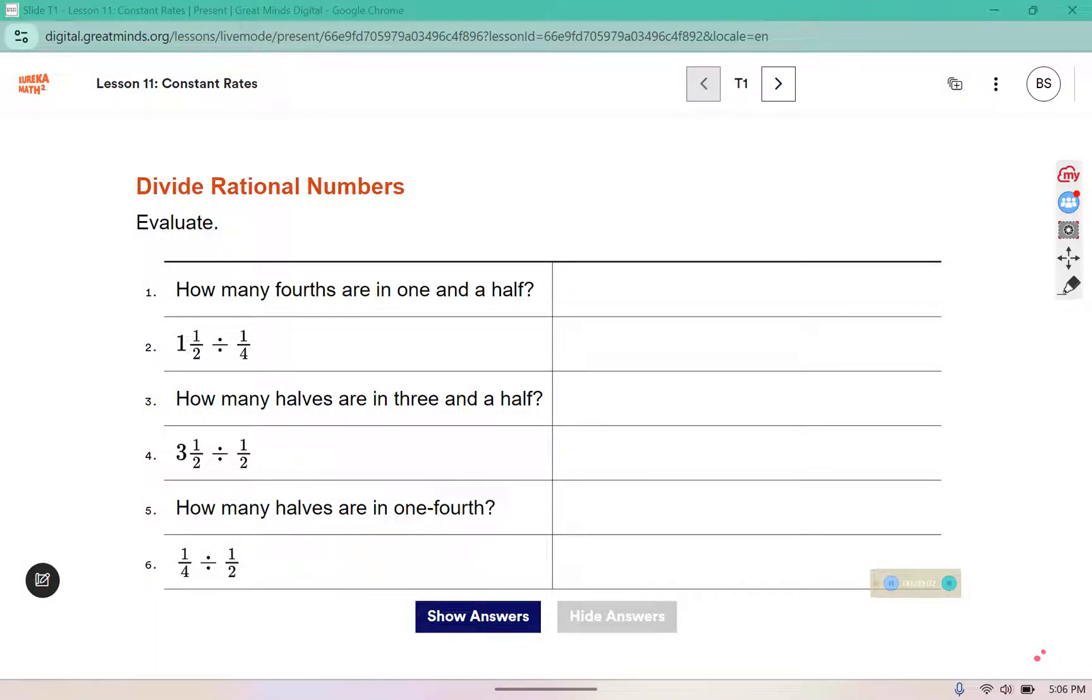In this warm-up, we are figuring out how many fourths or halves are in something else. If you have forgotten how to change a mixed number to an improper fraction, I use this strategy where I multiply the whole number and the base. So 3 times 2 is 6, and then I add the top. 6 plus 1 is 7, so this is 7 over 2.